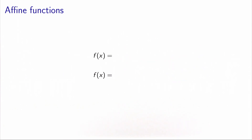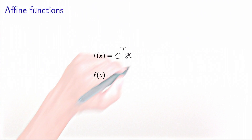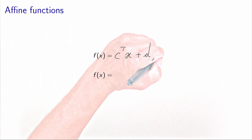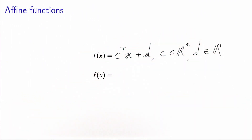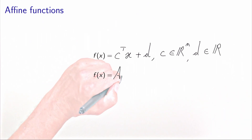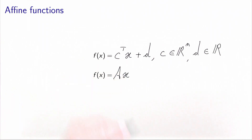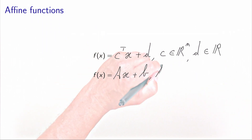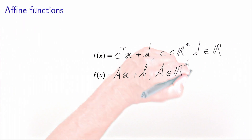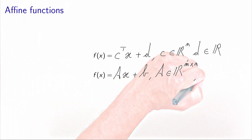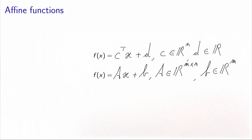A concept very close to linearity is the concept of an affine function. An affine function is a linear function shifted by a constant. In the multidimensional case, we have f equal to A times x plus a vector B that shifts the value, where A is an m-by-n matrix and B is a vector of size m.